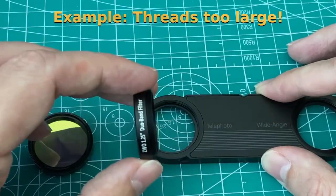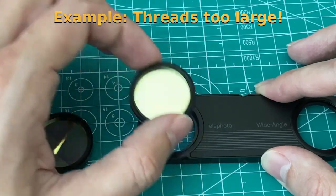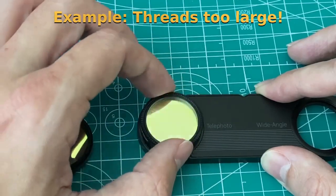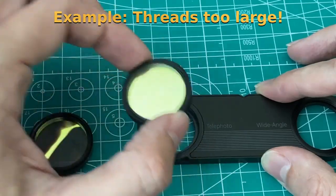However, they have a ZWO dual band filter and that just doesn't catch in these threads at all. So this is what it looks like if you have the larger thread size in your Dorf Lab filter holder.